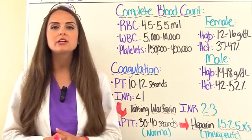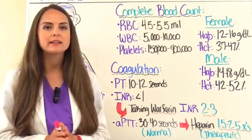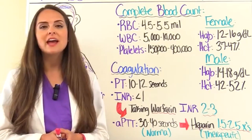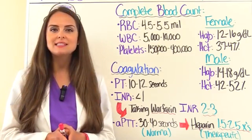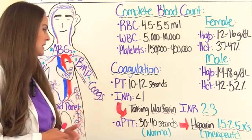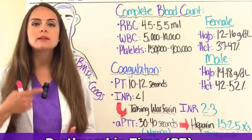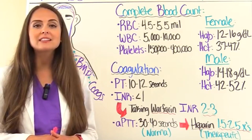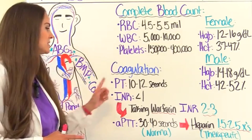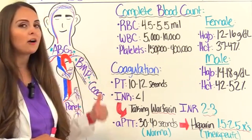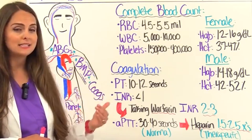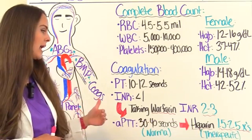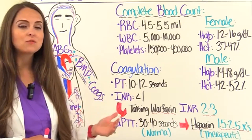Now let's look at coagulation levels. If your patient is on an anticoagulant, you definitely want to know their coagulation levels. If they're on warfarin, you want to know their PT-INR. If they're on heparin, you want to know the APTT. PT stands for prothrombin time, and a normal PT level in someone not on any anticoagulant should be 10 to 12 seconds. INR is calculated from the PT and stands for international normalized ratio. Normally it should be less than 1 for someone not taking anticoagulants.